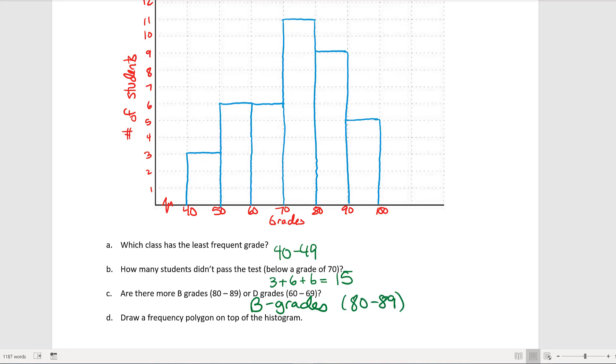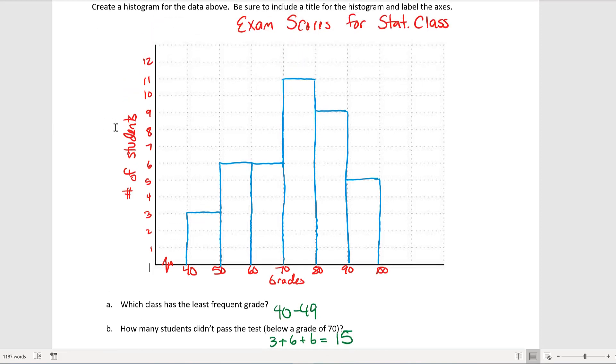And then the last request is to draw a frequency polygon on top of the histogram. So what a frequency polygon does, it will be the same exact thing as the histogram except instead of bars we're going to have dots. So I'm not going to redo any of the axes or redo any of the labeling. I'm just going to put dots in the middle of where the bars would be, and then I'm going to connect those dots with straight lines in between each class. So that would be the frequency polygon sitting on top of the histogram.